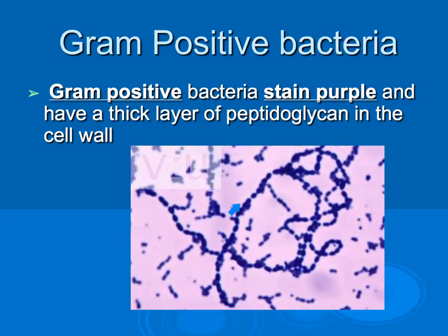We can see that this is a Gram positive bacterium. If we look at the shape of the bacteria, we can see that they are circular, therefore they are cocci. And we can see that we have these in chains, and that indicates that that's strepto. So we have Streptococcus bacteria present and we have Gram positive bacteria.